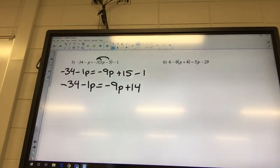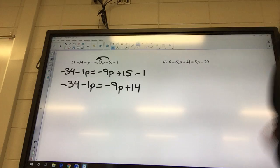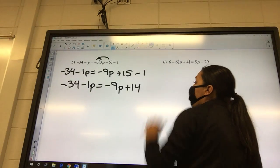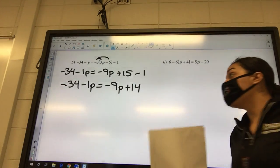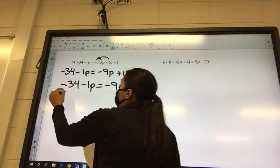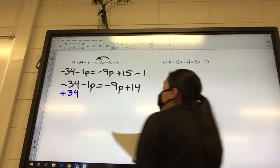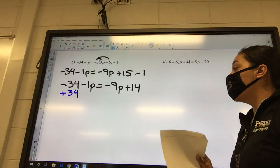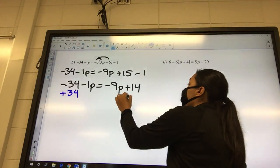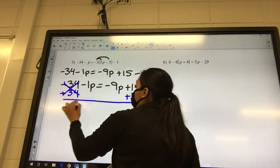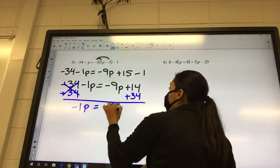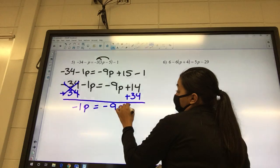What's going to be our next step? Letters to the left, numbers to the right. So negative 34, is it a letter or a number? Number, so does it need moved? Yes, it needs to go to the right side. So plus 34, and which one does it go under? The 14, so plus 34. So I got negative one p equals negative nine p plus 48.